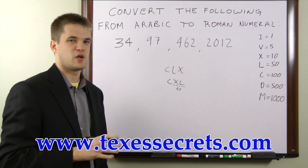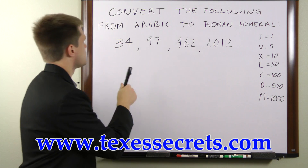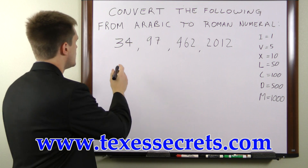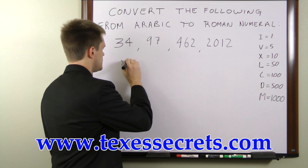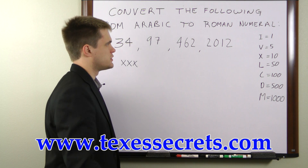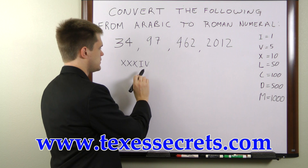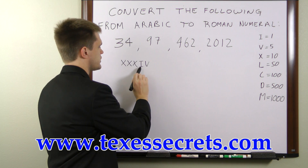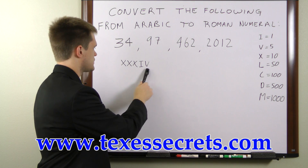So those are the three things you have to remember. Now let's go ahead and work these problems — we have to convert all these numbers into Roman numerals. For 34, all we have to do is add up three tens to get 30, so we get three X's. To get the 4, we write an I and then a V, because we can't have four of the same symbol in a row, so we subtract 1 from 5 and write IV. So XXXIV is our answer for 34.